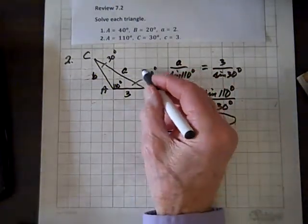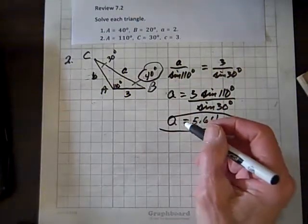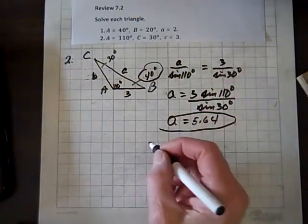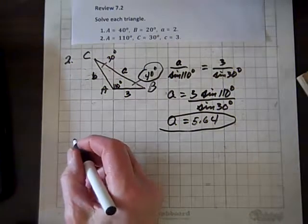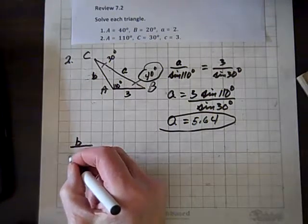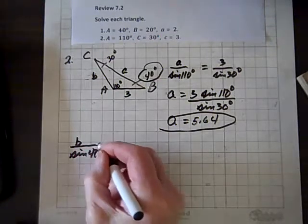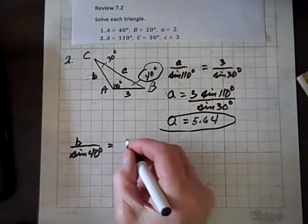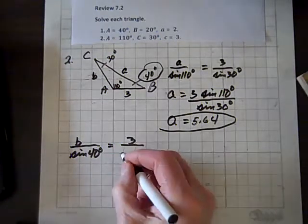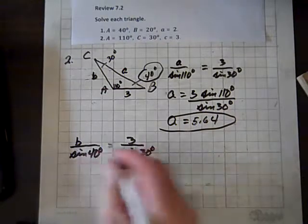By the way, this is the angle we solved for. We know C is 3. Let's do the same thing for B. B over sine of 40 degrees equals 3 over sine of 30 degrees.